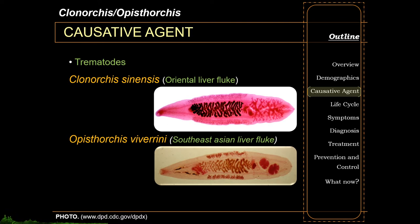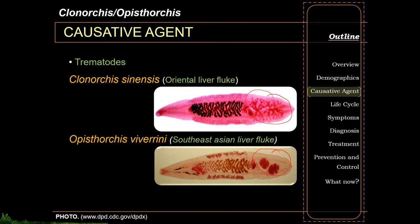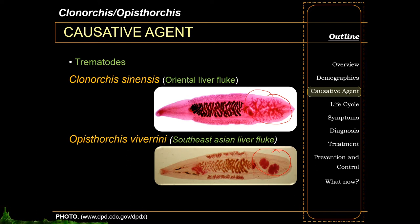Their main morphologic difference would be the differences in their testes. As you can see, both Clonorchis and Opisthorchis have two testes, but the testes of Clonorchis are usually arranged in tandem and are very highly branched. In contrast, the testes of Opisthorchis are oriented diagonally and are lobed. That's one way to differentiate these two adult worms.